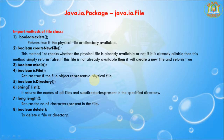Now I am going to discuss some important methods in the File class. exists() returns true if the physical file or directory is available; otherwise returns false. createNewFile() first checks whether the physical file is already available — if it is, it returns false; if not, it creates a new file and returns true. mkdir() returns a boolean: if the directory is not available, it creates it and returns true; if already available, it returns false.